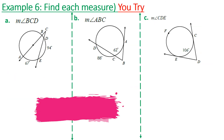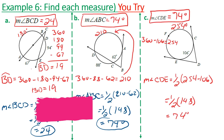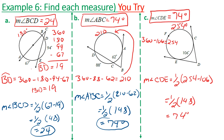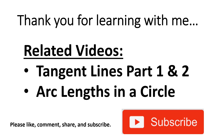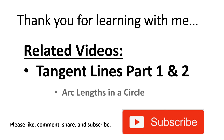I know this has been a long lesson, but try the last three practice problems on your own. The answers are 24, 74, and 74. If you didn't get them correct, pause the video and analyze my work. Related videos include tangent lines parts one and two, and arc lengths in a circle. Please like, comment, share, and subscribe — thank you for learning with me.